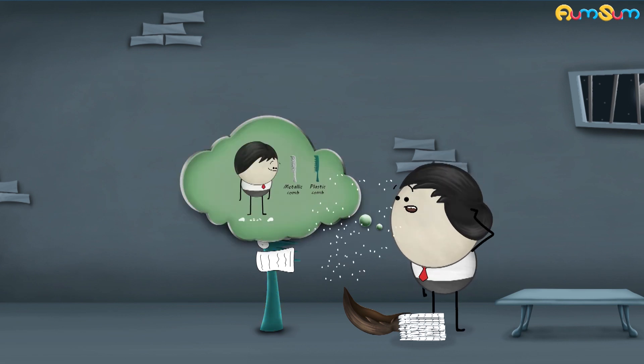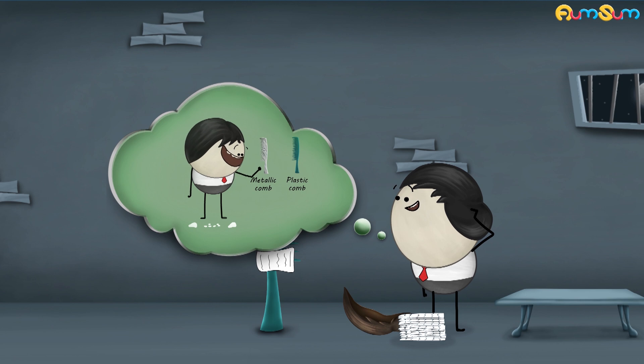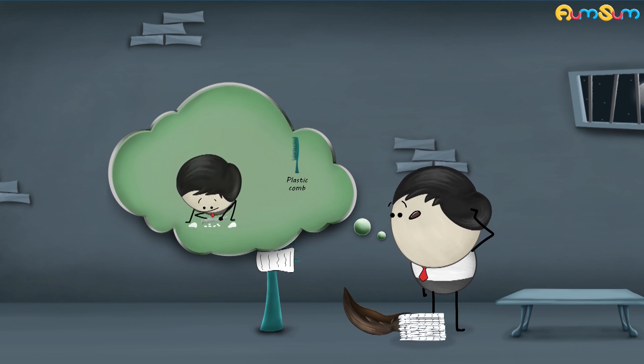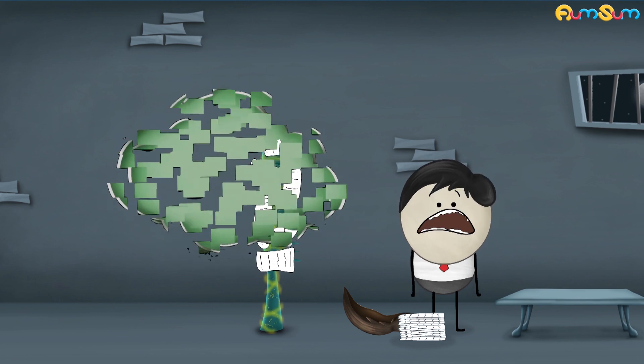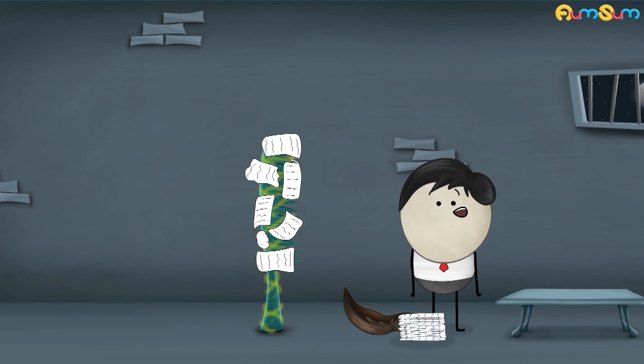However, do you think, like a plastic comb, a metallic comb would also attract the pieces of paper? No, you are wrong. A metallic comb will not attract the pieces of paper like the plastic comb. Wondering why is that so?